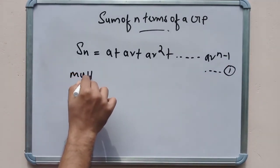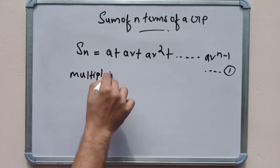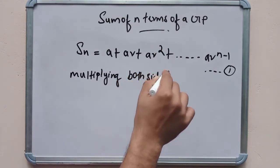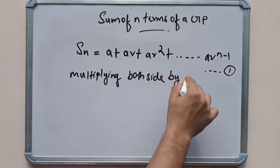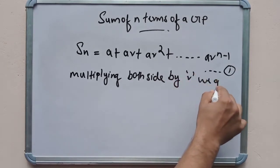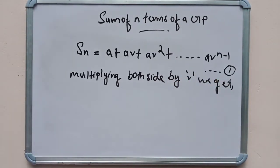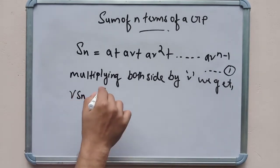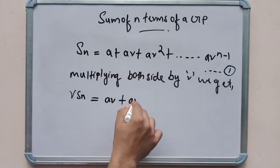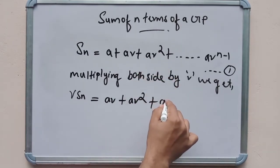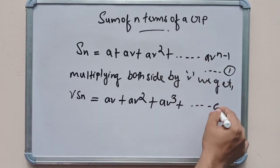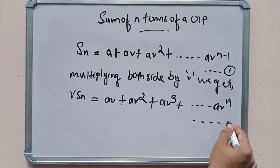Multiplying both sides by r, we get r·Sn equal to ar plus ar squared plus ar cubed, and so on, up to ar^n. This is the second equation.